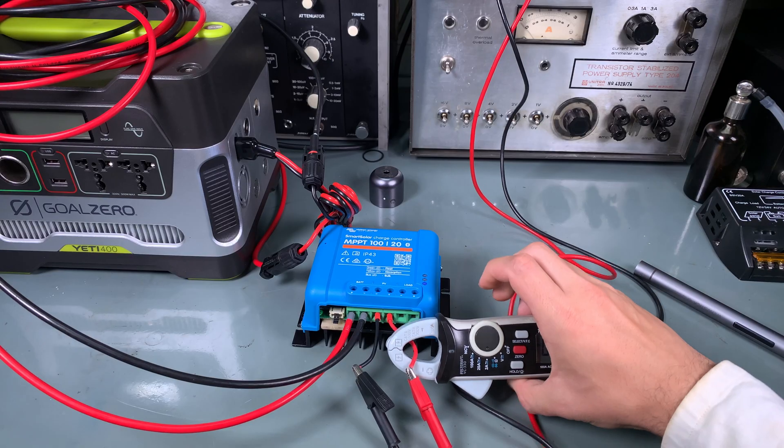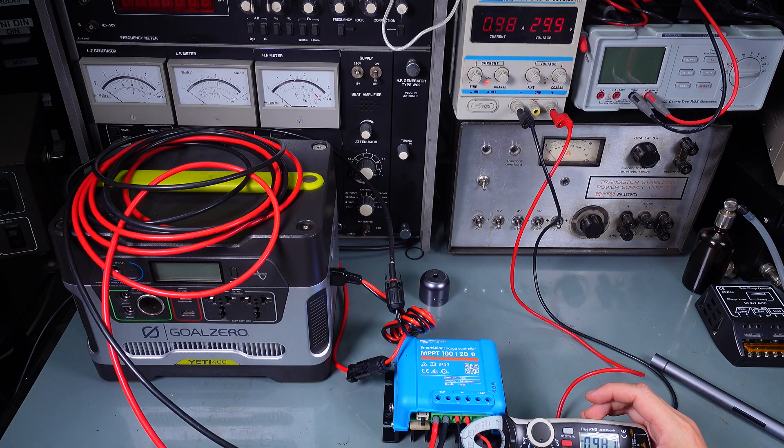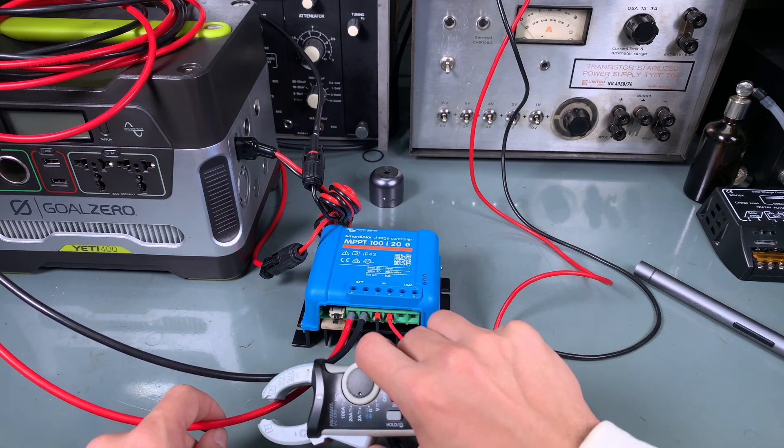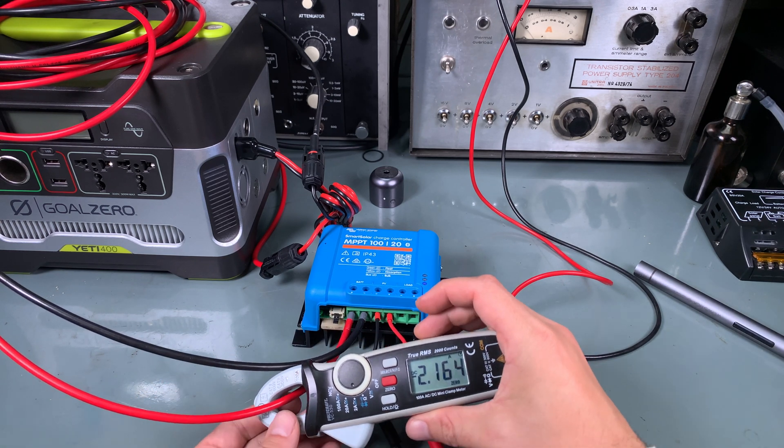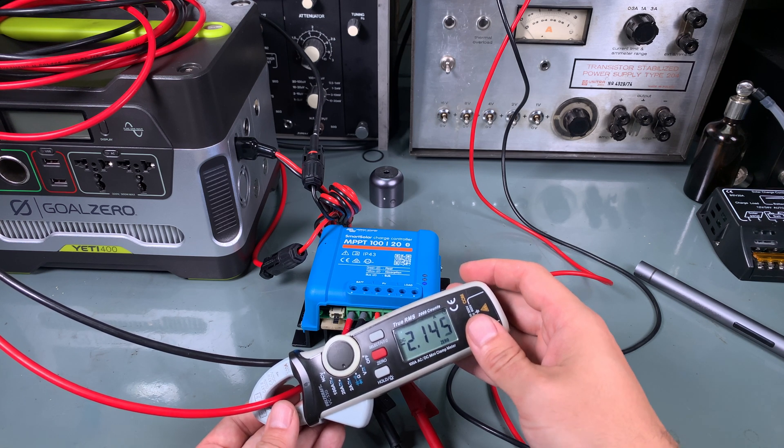Let's see how does it look on the clamp meter. When I'm going to measure the input we are going to get exactly 1 amp. But at the output something magic is going to happen. And we've got a bonus of additional 1 amp.